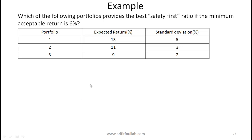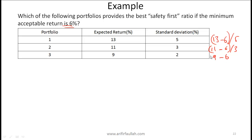As a quick practice example, calculate the safety first ratio for three portfolios with an acceptable return of 6%. For portfolio A: 13 minus 6 divided by 5. For portfolio B: 11 minus 6 divided by 3. For portfolio C: 9 minus 6 divided by 2. Calculate all three and pick the one with the highest safety first ratio — that is the safest portfolio.